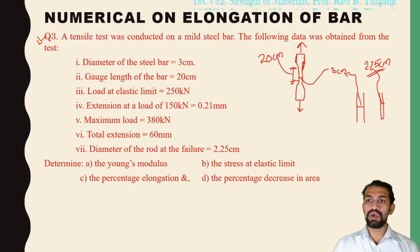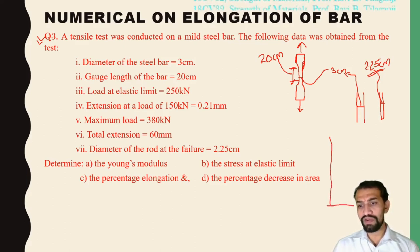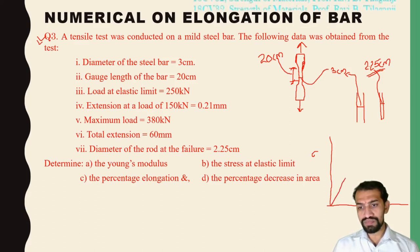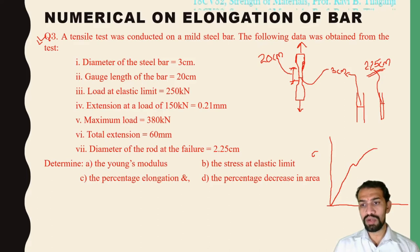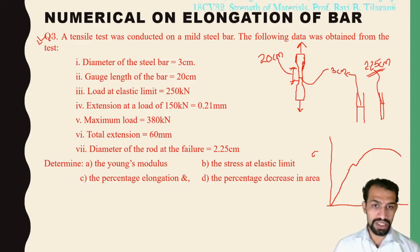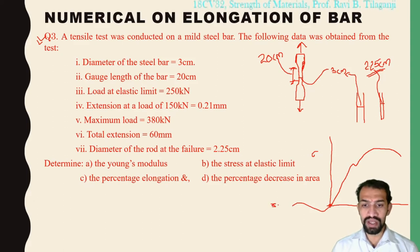The diameter at failure reduces to 2.25 centimeters. We can also plot the stress-strain graph for the tensile test, showing a linear region, a yielding region, then further increase up to the ultimate maximum load, and finally the failure point. At the start, diameter was 3 cm and gauge length was 20 cm.